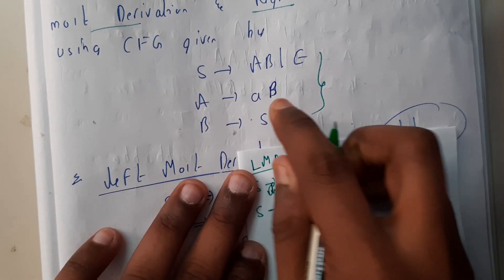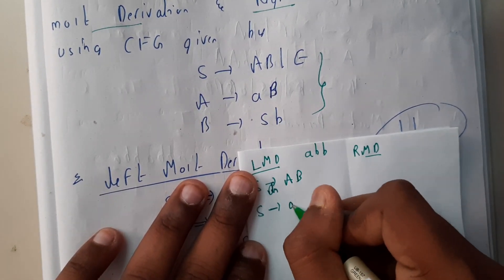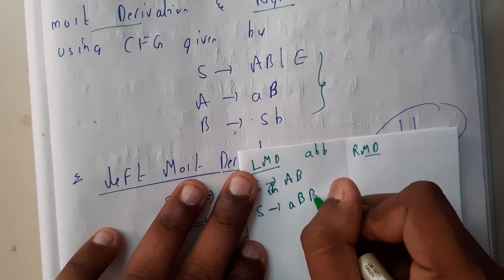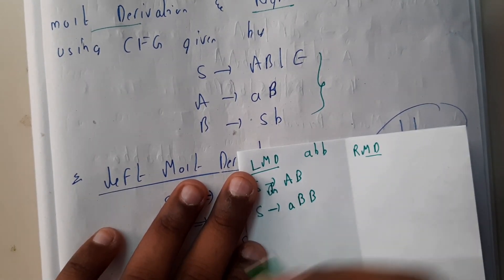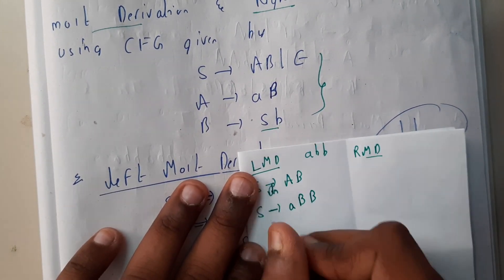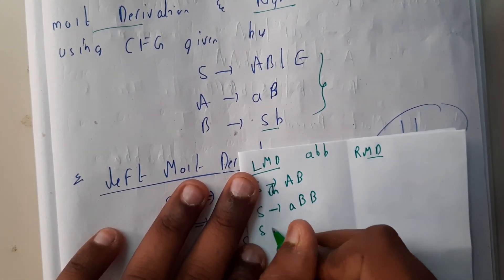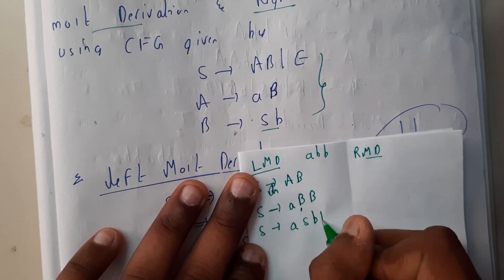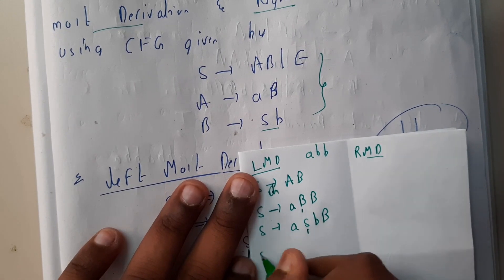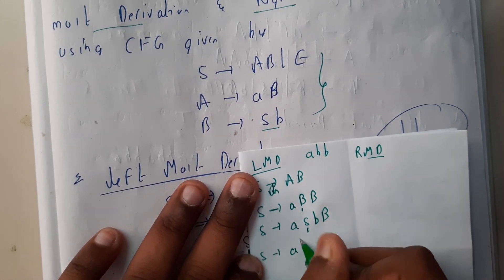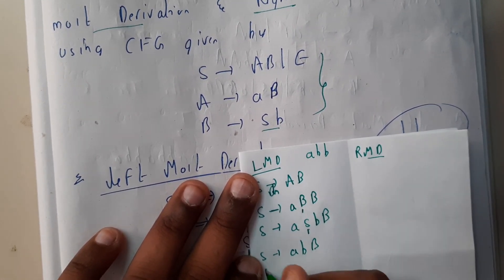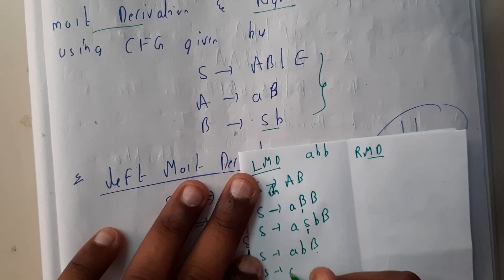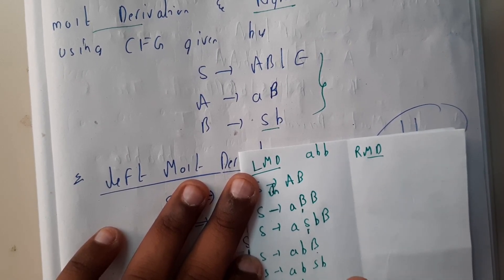We need 'abb', and 'a' is already available, so we change it using the production. 'B' can be replaced by SB, so S is replaced with SB, and then that S is replaced with epsilon (empty). Again, replacing the leftmost B with SB, and then the remaining S is replaced with epsilon, giving us 'abb'.